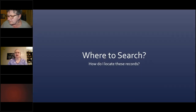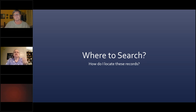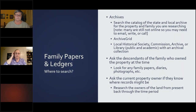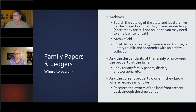Where to search now that we know some of these records: these records are available in a bunch of places. Archives are where a lot of family paper collections end up, so start with the catalogs of the state and local archives where the property is, where the family may have lived, where the descendants may have moved. You may have to do some old-school research because a lot of smaller private archives may not be online yet — it's 2021 but many archives are still inventorying with pen and paper or maybe an Excel spreadsheet.